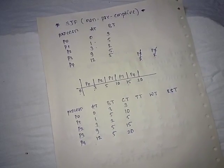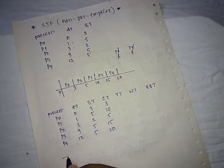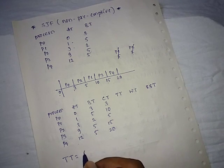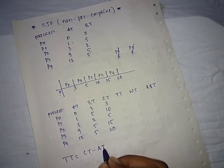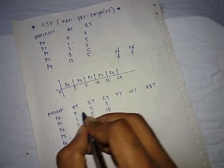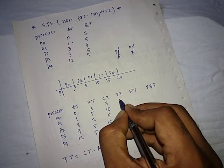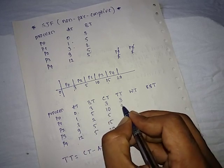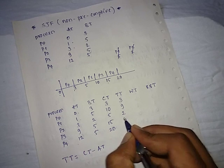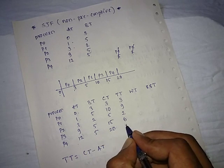Now the formula for turn around time is completion time minus arrival time. So completion time we have calculated here. 3 minus 0 is 3. 10 minus 1 is 9. 5 minus 3 becomes 2. 15 minus 9 becomes 6, and 20 minus 12 becomes 8.